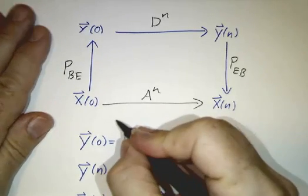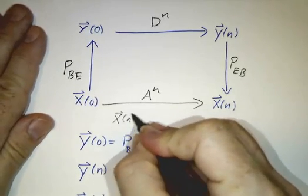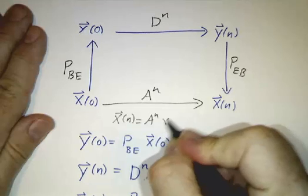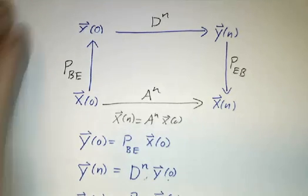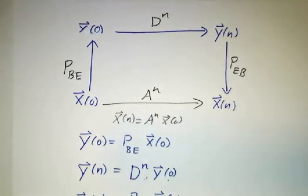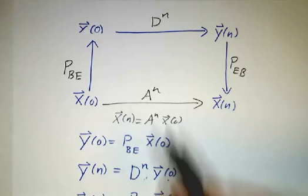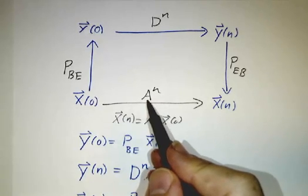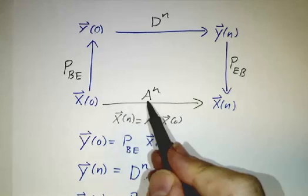The statement that x at time n is A to the n times x at time 0 is completely true. It's also completely useless.